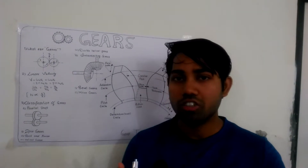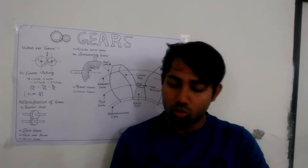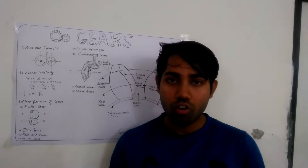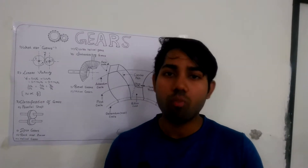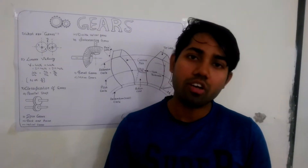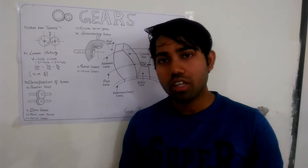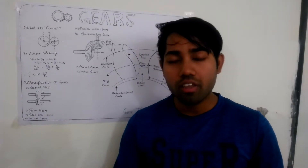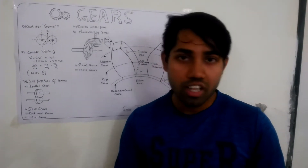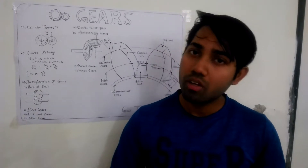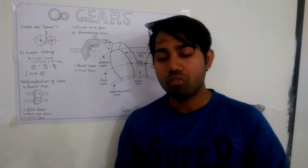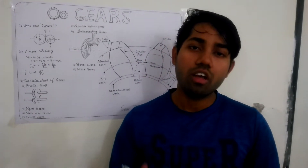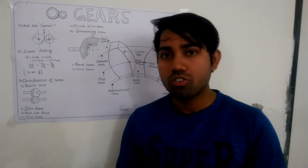Let us consider this is my first shaft and this is my second shaft. If I want to transmit the motion of this shaft to another shaft, then I will use a gear. If the power transmitted between the shafts is small, then motion may be transferred using a disc. If there is no slip, then motion of one shaft can easily transmit to the other. But if power transmitted increases, there are chances of slip, and then no definite motion from one shaft to another shaft can be transmitted. To avoid this, we use a gear. A disc with teeth is known as a gear.